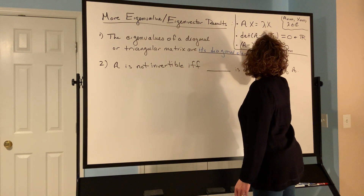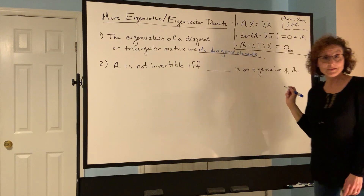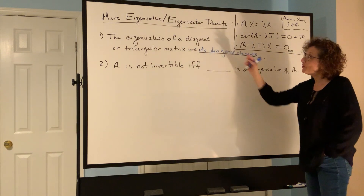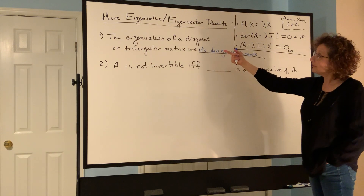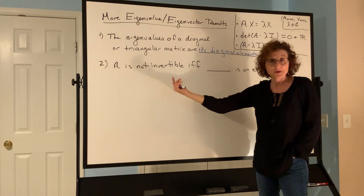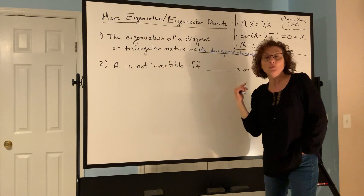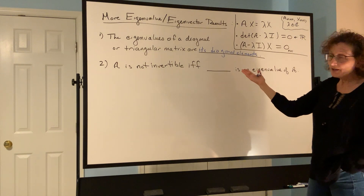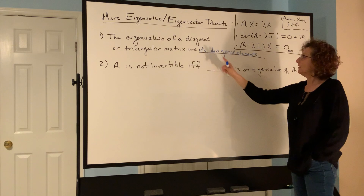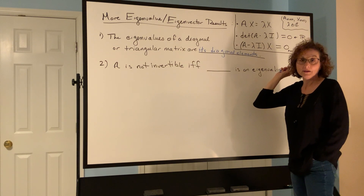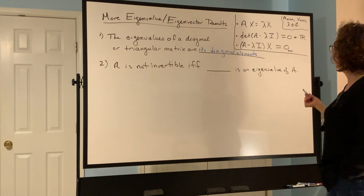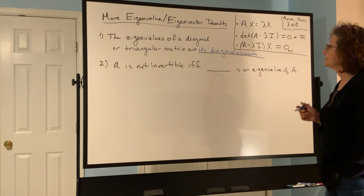Try it for a specific one. That makes it super easy — when I have a diagonal matrix or an upper or lower triangular matrix and I want to know the eigenvalues, I can just read them right off the diagonal.